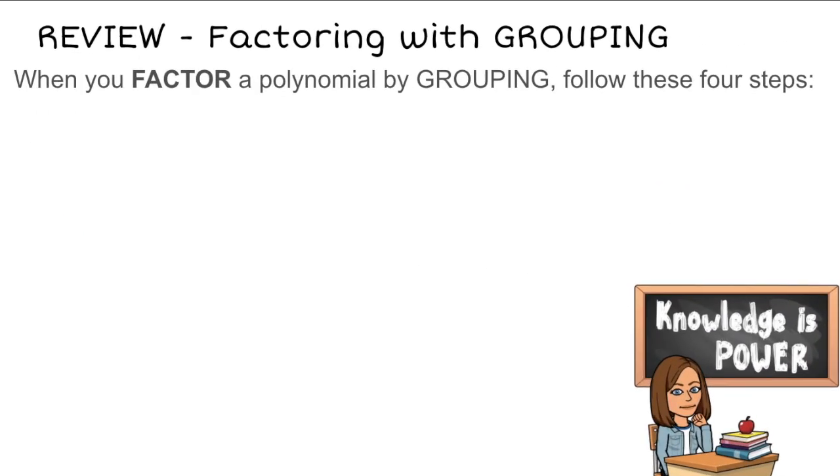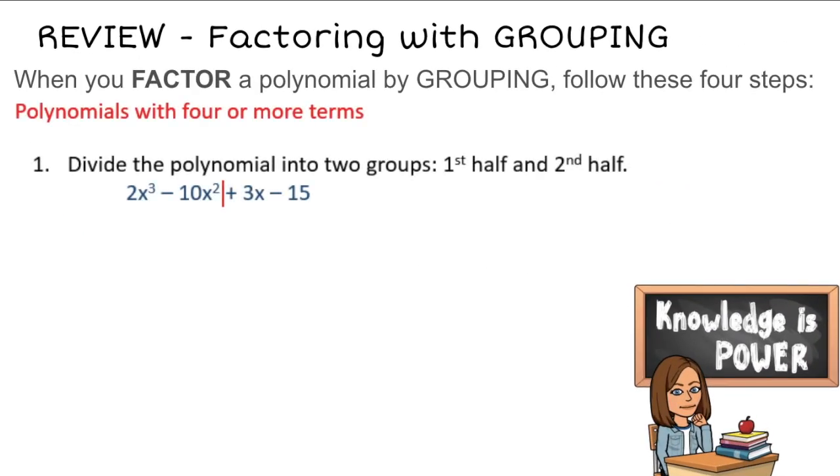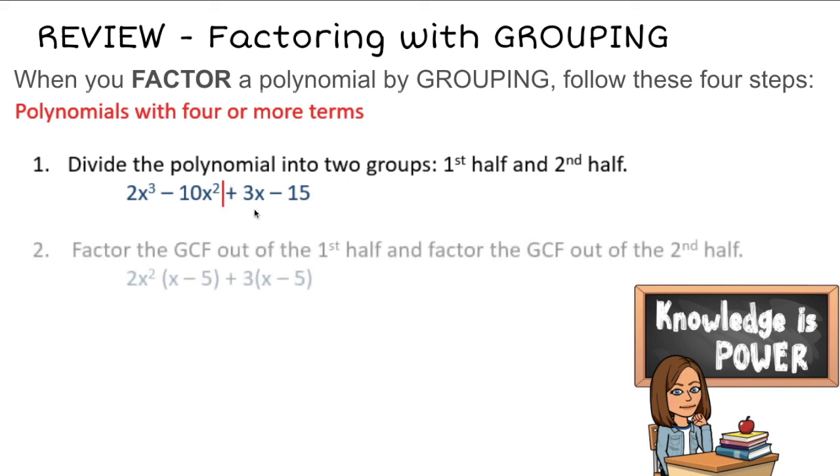So just to review, the four steps again are to first divide the polynomial into two groups. Of course, when you're doing this, make sure that you do have addition. Then to factor out the greatest common factor of each binomial in the first half and the second half.